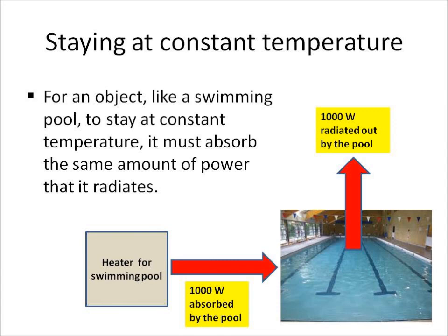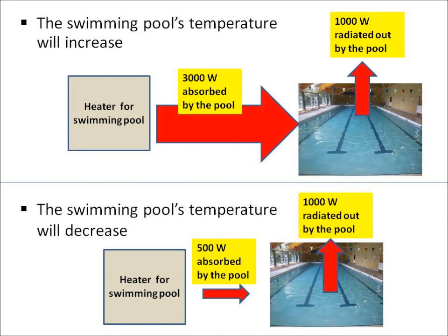That swimming pool will stay at constant temperature. In the top example, the pool absorbs more energy than it radiates — in this case its temperature will increase. But in the bottom example, the pool radiates out more energy than it absorbs, so in this case the swimming pool's temperature will decrease.